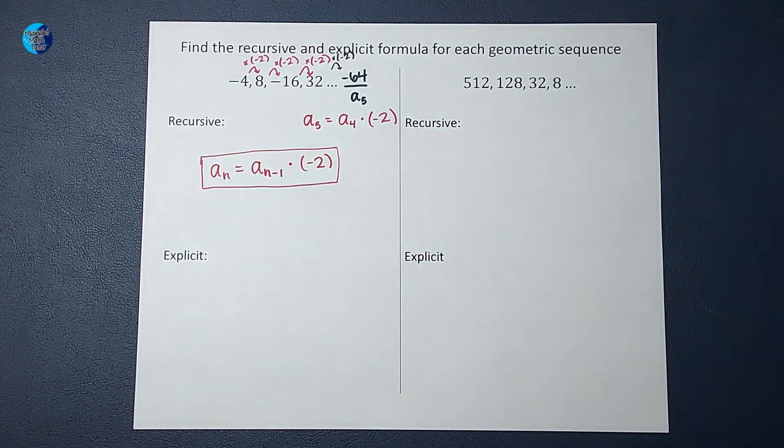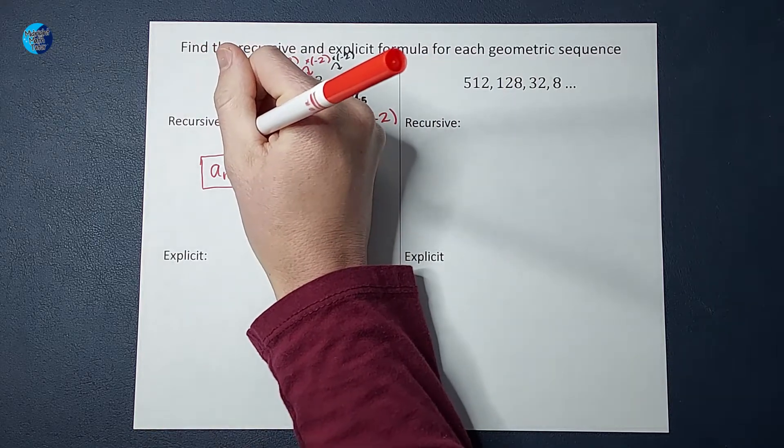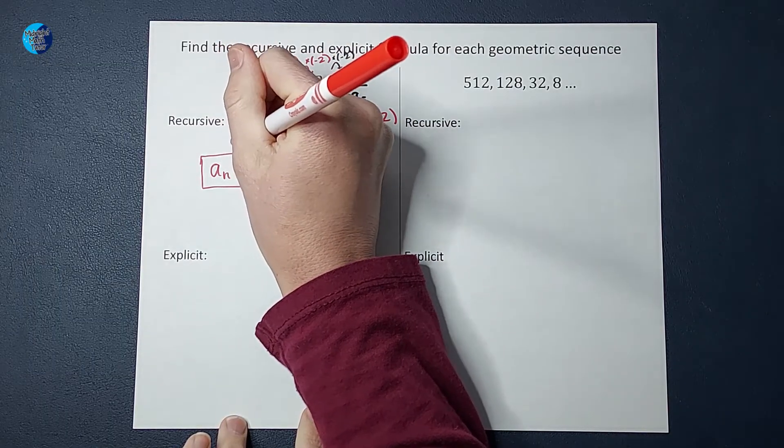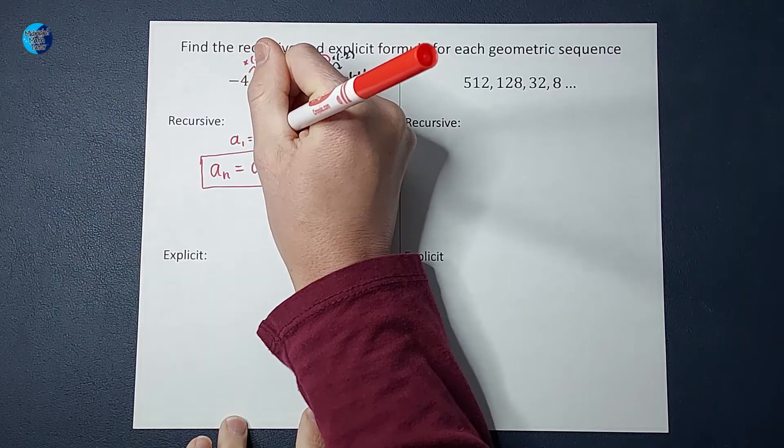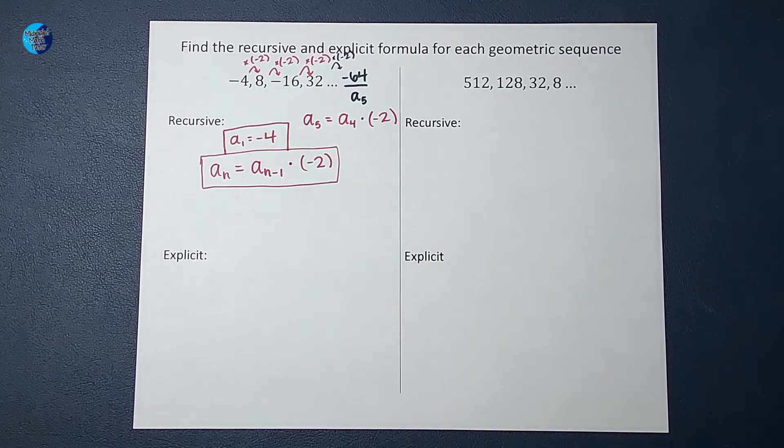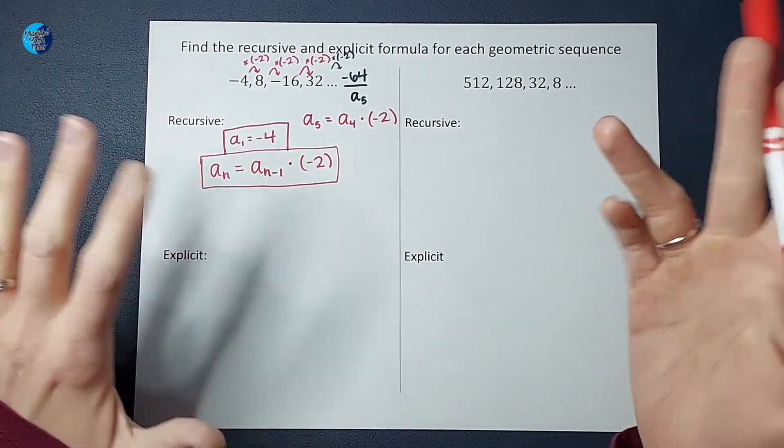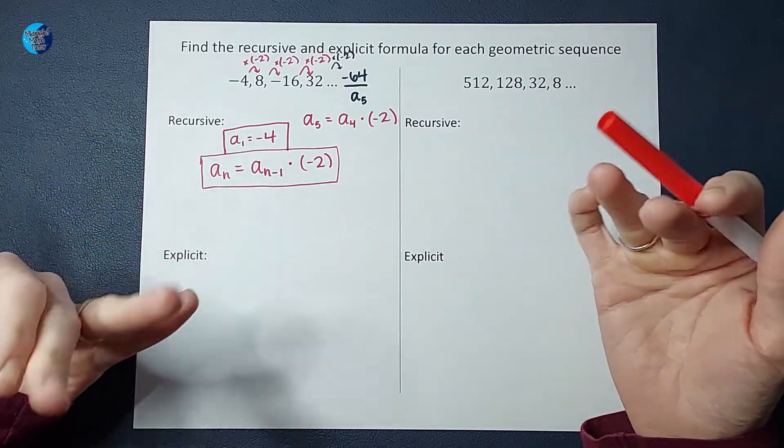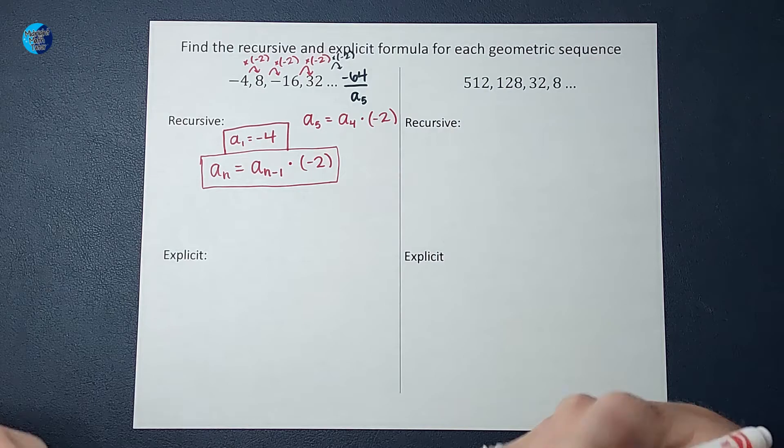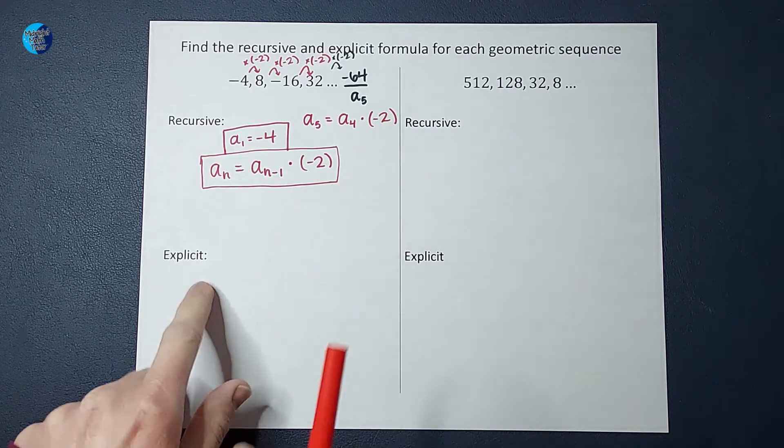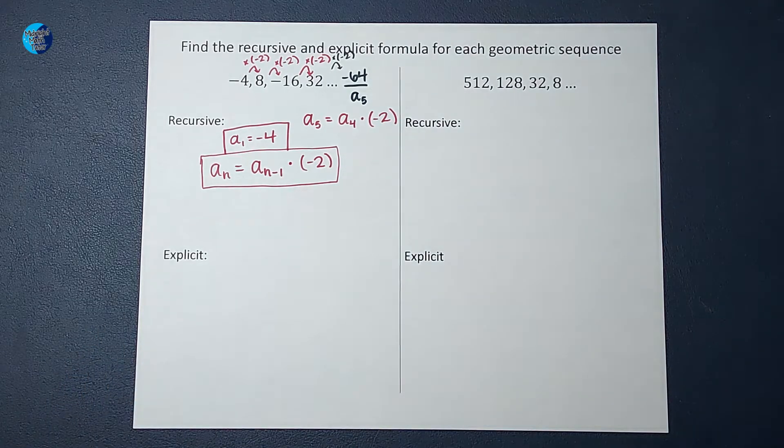In order for this to be helpful for anybody trying to use it, I need to list what the first number in this sequence is, which is negative four. So I make a little note that says A sub one is negative four. You might have noticed recursive formulas are a bit limited because you have to know the number before. If I wanted to find the hundredth term, I have to know the 99th. Stick around for explicit formulas.